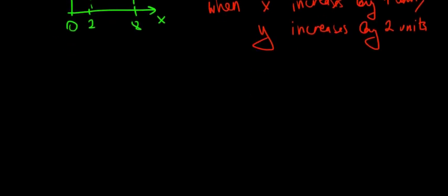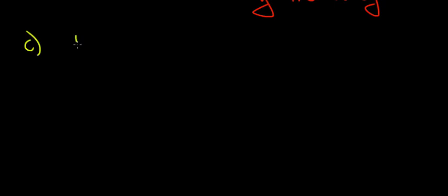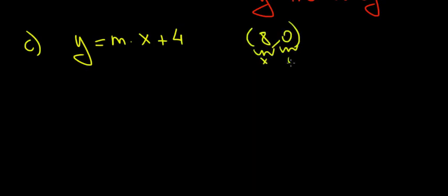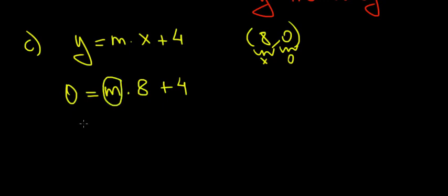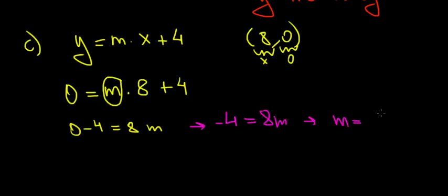Now for part C. We have the line y equals m times x plus 4, since the constant is 4. This line passes through the point (8, 0), meaning when x is 8, y is 0. Plugging in: 0 equals m times 8 plus 4. Rearranging: 0 minus 4 equals 8m, so minus 4 equals 8m, giving m equals minus 4 over 8, which is minus 1 over 2.